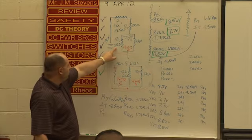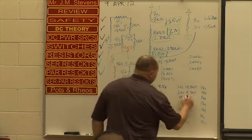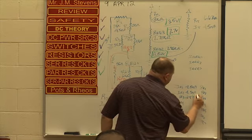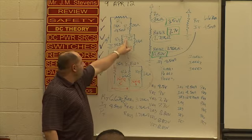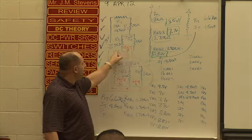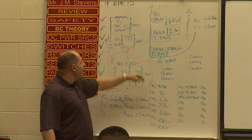So what's 7.7 divided by 3K for IR3? 2.57 milliamps. Very good. We can do the same thing to find IR4. It's at 7.7 volts. That's what's common to these two.